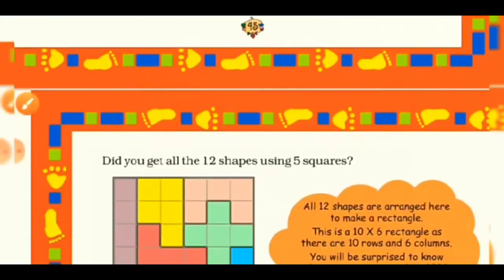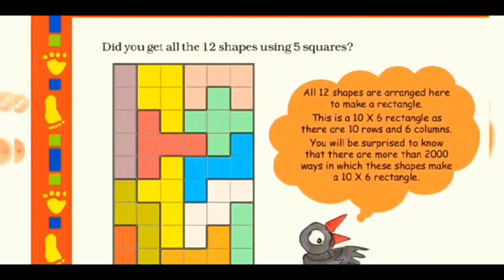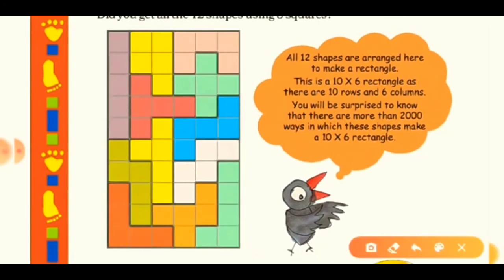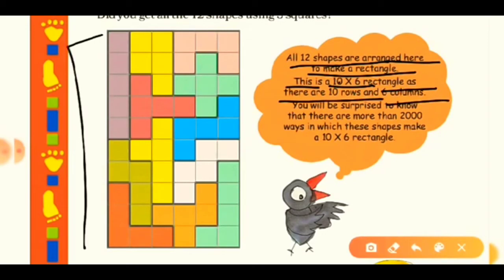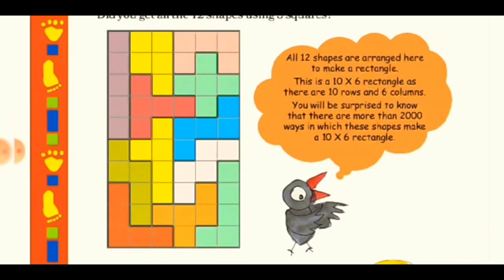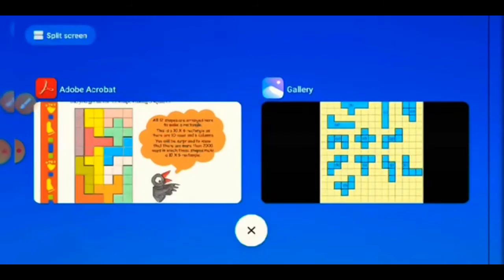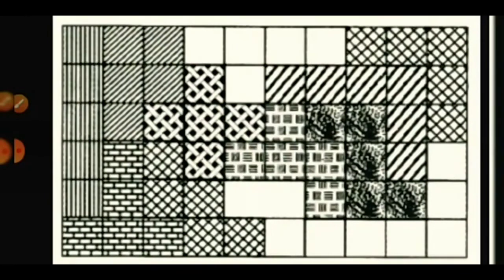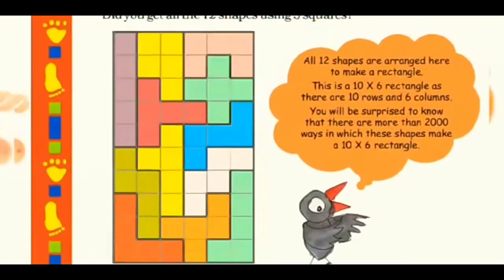On the next page: yes, we got all 12 shapes using five squares. Notice that all 12 shapes are arranged to make a 10×6 rectangle — 10 rows and 6 columns. You will be surprised to know there are more than 2000 ways to arrange the 12 pentomino shapes to fill a 10×6 rectangle. Here you can see one such arrangement where pentominoes fill the rectangle completely.